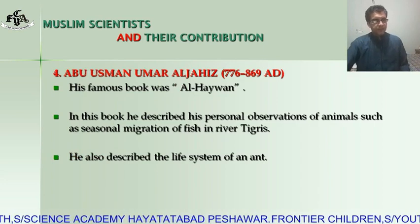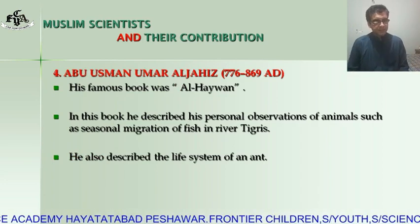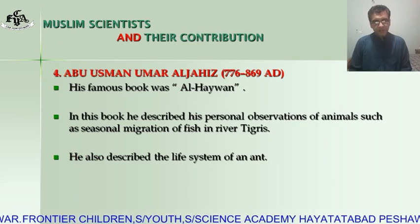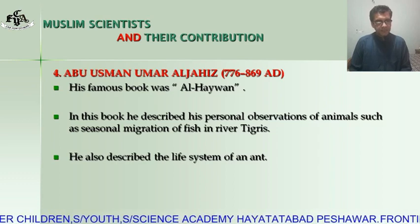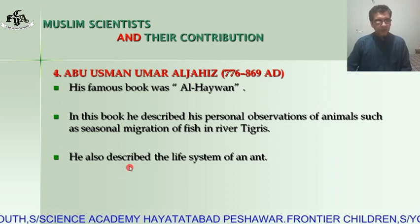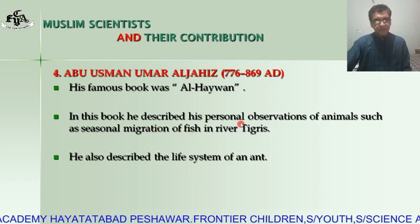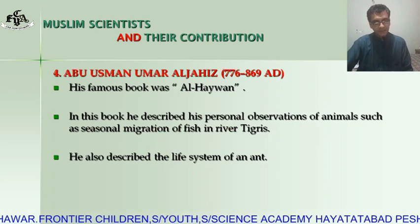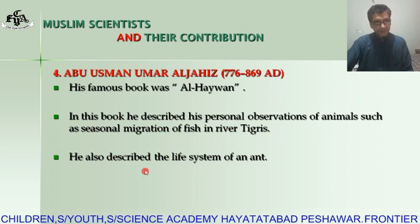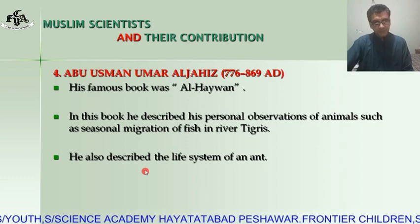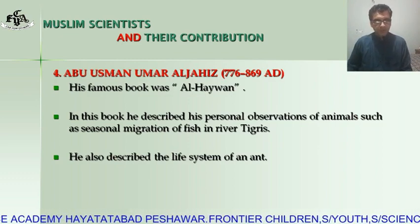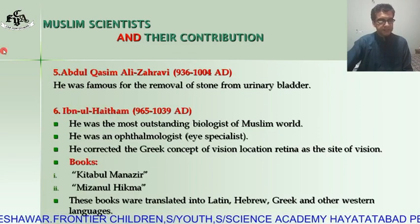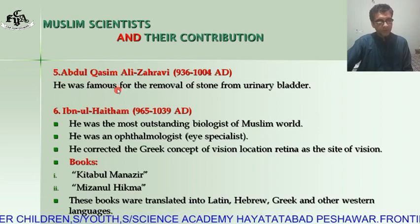The next scientist is Abu Usman Umar al-Hijaz, 776 to 869 AD. His famous book was Al-Haywan, in which he described his personal observations of animals, such as the seasonal migration of fish in the River Tigris. He also described the life cycle of an ant, making him an entomologist as well.